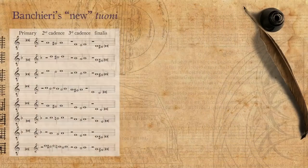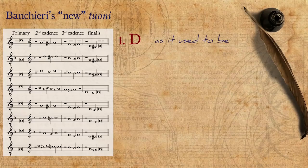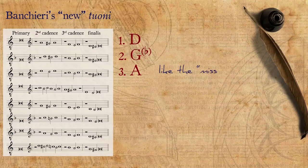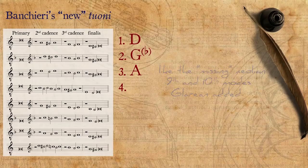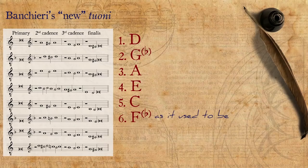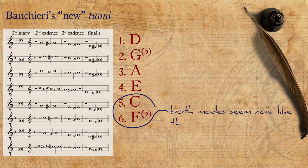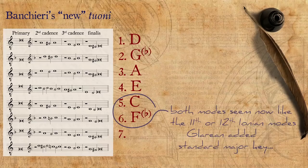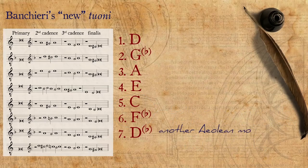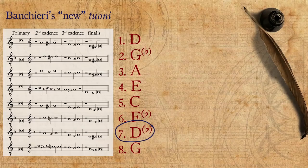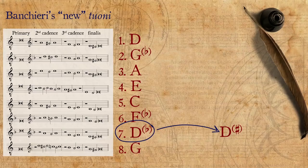Let's point out some details. The first mode is on D, as it used to be. The second mode is by now officially transposed to G with a flat. The third mode is on A, like the Aeolian 9th and 10th modes Glareanus added. The fourth mode is on E, as it used to be. The fifth mode is now on C, but the sixth mode is still on F where it used to be, but with a flat. Both modes seem now like the 11th and 12th Ionian modes Glareanus added, or in modern eyes a standard major key. The seventh mode is on D with a flat, which makes another Aeolian mode, and the eighth mode is on G, as it used to be. Excluding the seventh mode — which according to some writers later in the century got a sharp and turned from a minor mode to a major mode — this set of tuoni is found in treatises throughout the century.